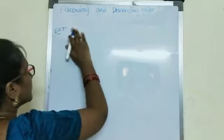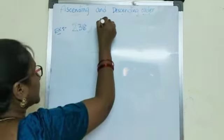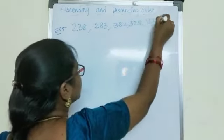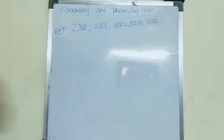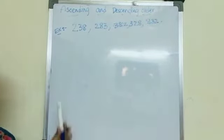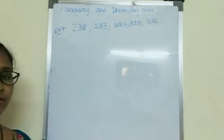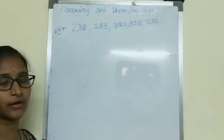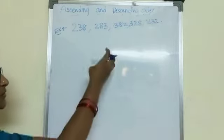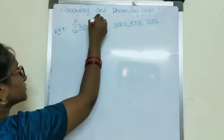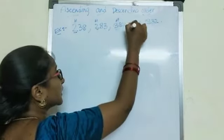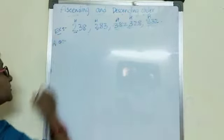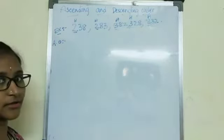Like 238, 283, 382, 328, 832 — these are 5 numbers and all are 3-digit numbers. Now I just want to arrange these 5 numbers in ascending order. Ascending order means small to big. If I want to compare any number, I should start comparing with the hundreds place. Let us start comparing with their hundreds places. Here the hundreds place is 2, in this number also hundreds place is 2, here is 3, here is 3, and here is 8. Ascending order means small to big. Which is the smallest hundreds digit? 2, 3, 8 — yes, it is 2.